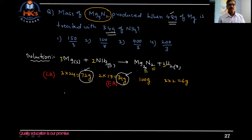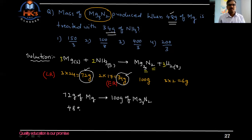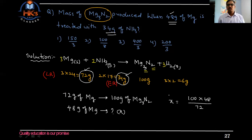All calculations must be done based on the limiting reagent. So: 72 grams of magnesium produces 100 grams of Mg₃N₂. But only 48 grams of magnesium is given. So 48 grams of magnesium should produce x grams of Mg₃N₂. Therefore x = 100 × 48 ÷ 72 = 200/3 grams. That is option number 4.